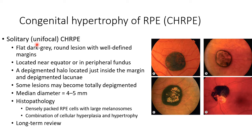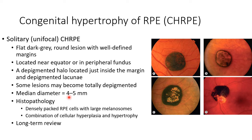Solitary or unifocal CHRPE usually presents as a flat dark grey round lesion with well defined margins. It can be located near the equator or in the peripheral fundus. There can be a depigmented halo located just inside the margin and there can be depigmented lacunae. Some lesions may become totally depigmented.